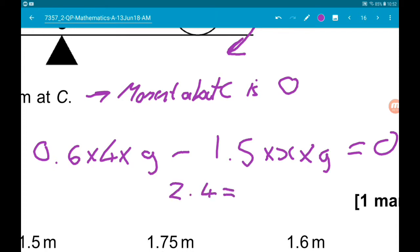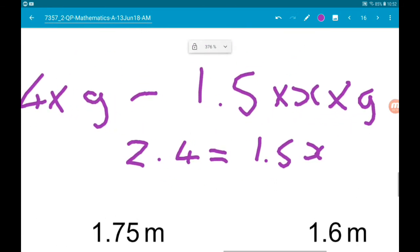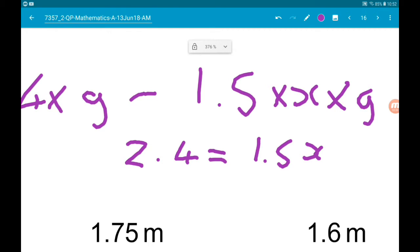So 2.4 is equal to 1.5X, divided by 1.5, and we get 1.6 is equal to X.